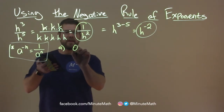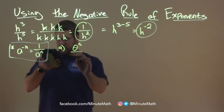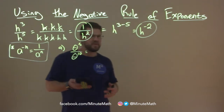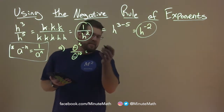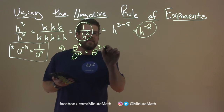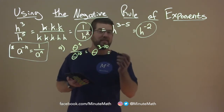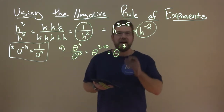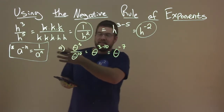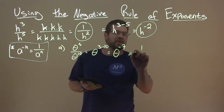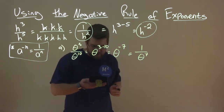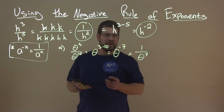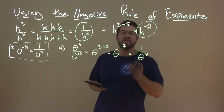Example A: we have theta to the third power over theta to the tenth power. Using the quotient rule, we subtract the exponents: theta to the 3 minus 10, which equals theta to the negative 7. Our negative rule of exponents says that's just equal to 1 over theta to the positive 7th power. In mathematics we don't like negative exponents, so our answer is 1 over theta to the seventh power.